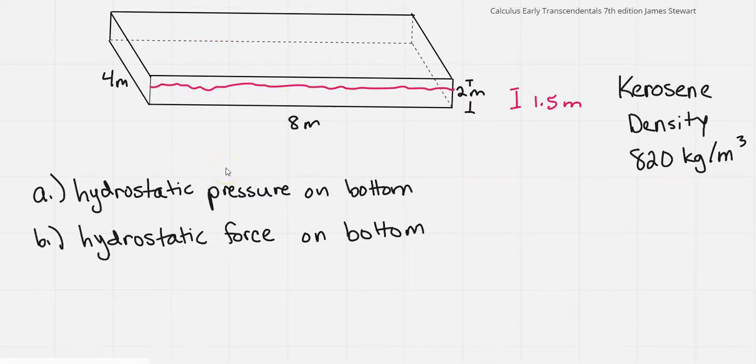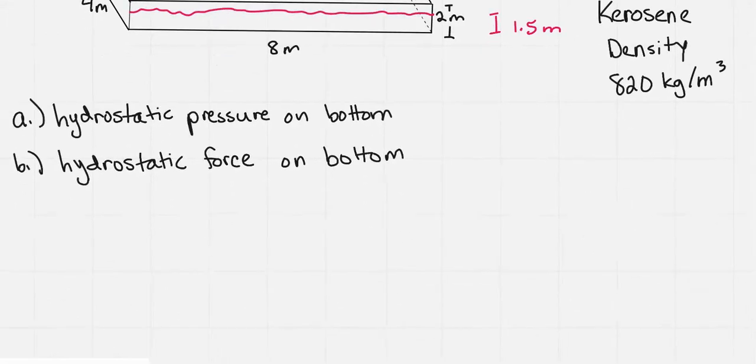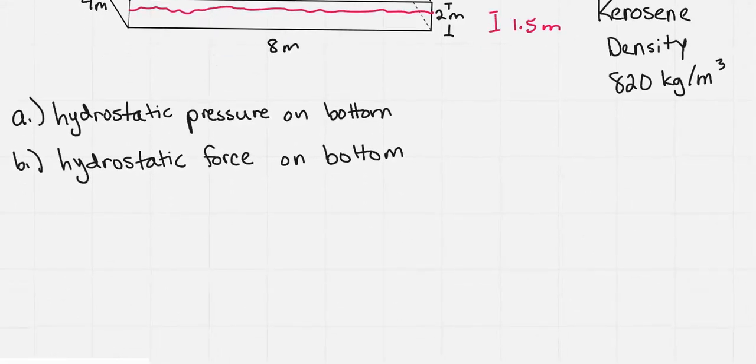So to start this, we need to think about all the different relationships we have here. So we have that pressure, as you could read in the book, is equal to force divided by area. Which also gives us that force then would be equal to pressure times area. So if we're finding just pressure, we would use just the pressure equation. If we're finding force, we need to find pressure and then multiply it by area.